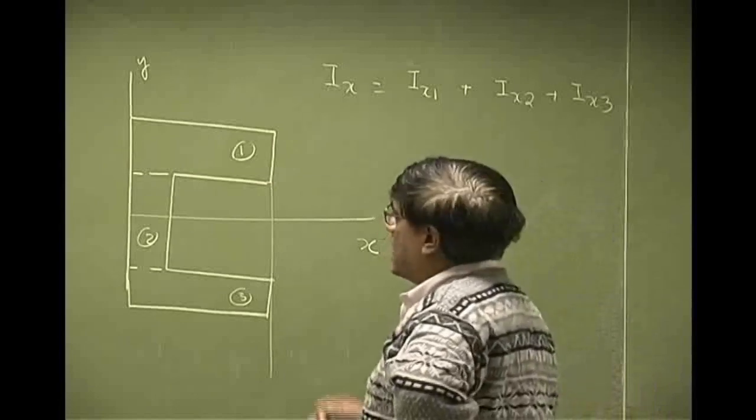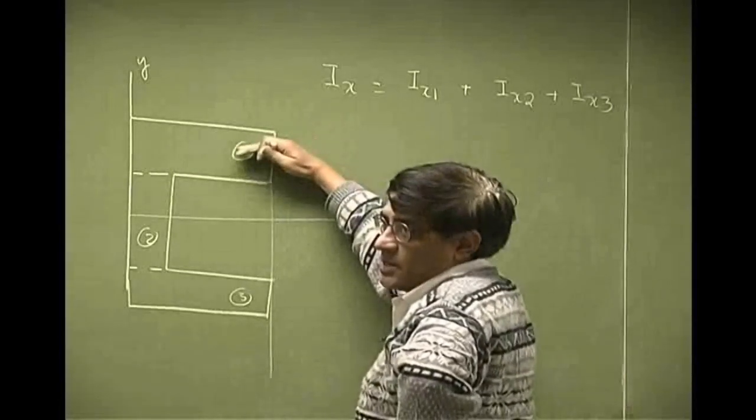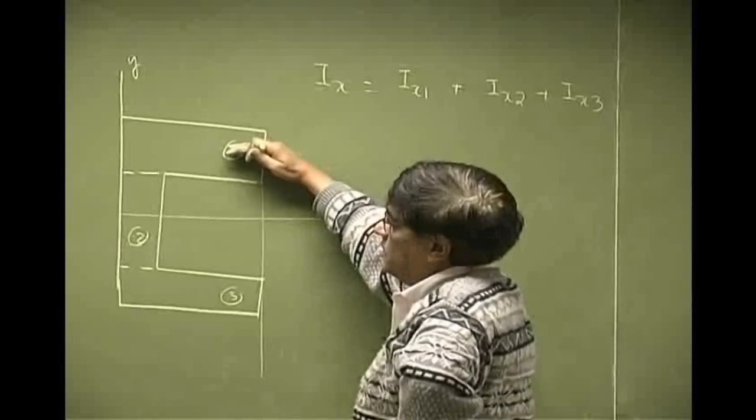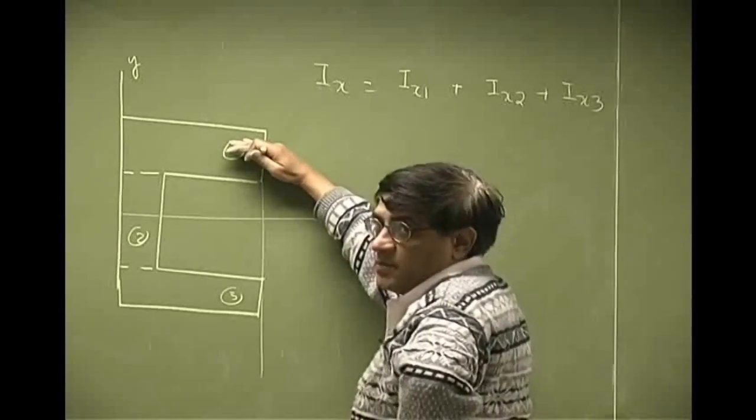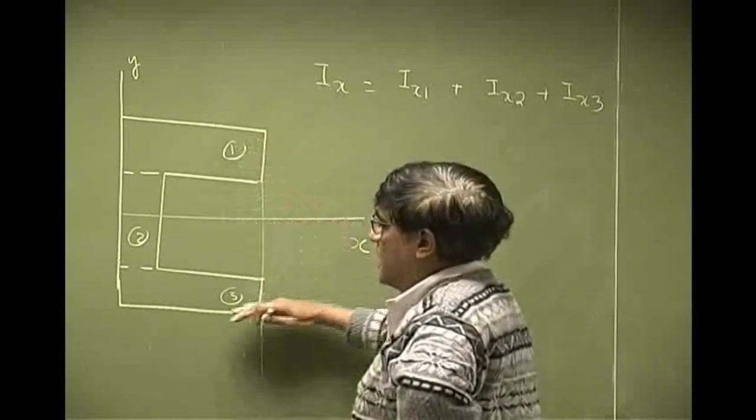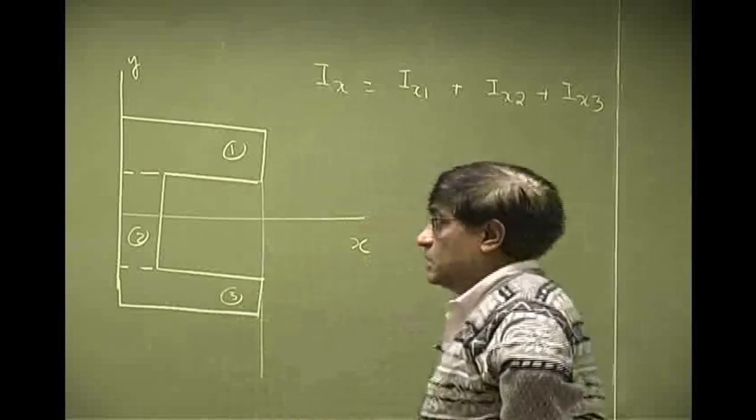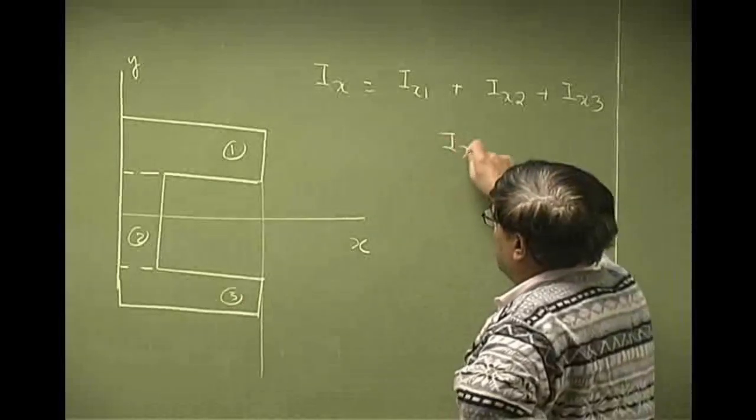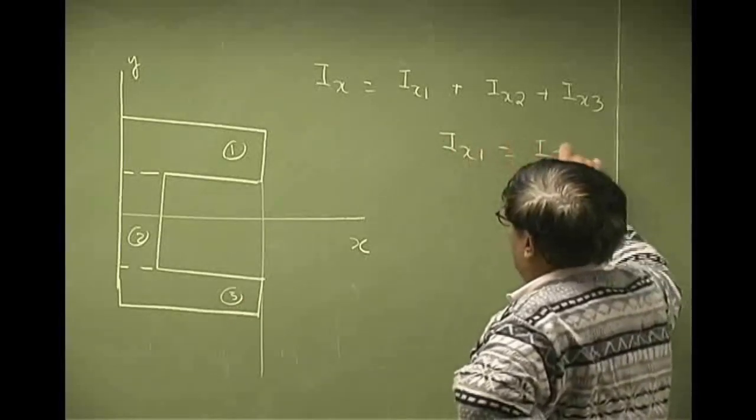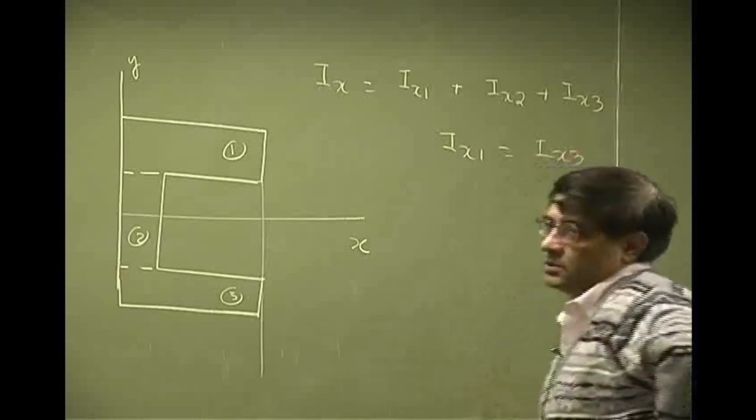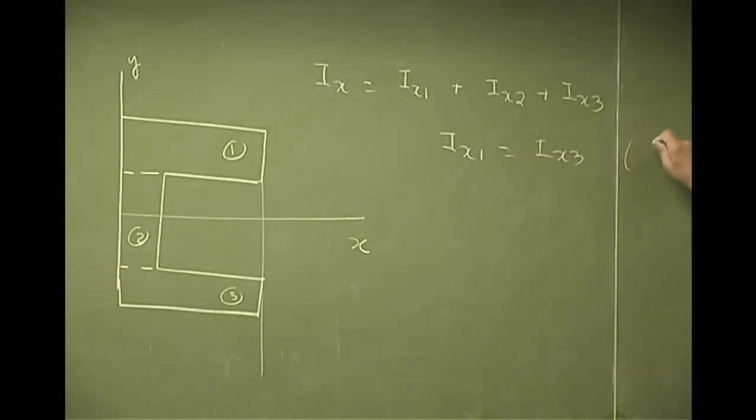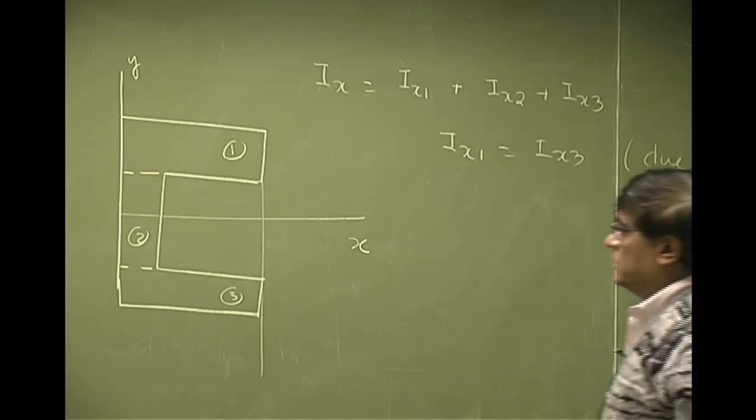Now, because of symmetry, see this has the same geometry as well as the same distance from x-axis as this one. So i-x-1 will be same as i-x-3. That is said because of the two symmetry.